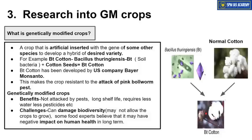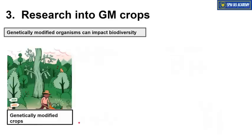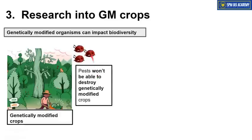For cotton the health impact may not be significant, but consider something like BT brinjal — if Bacillus thuringiensis genes are mixed with brinjal genes, we get BT brinjal. Since brinjal is consumed by humans, many experts believe consuming GM crops will have a negative impact on health in the long run. Regarding biodiversity: in areas with GM crops, pests that attack them will mostly die since they cannot eat the crop, with only the strongest surviving.